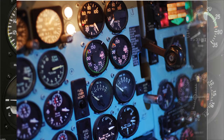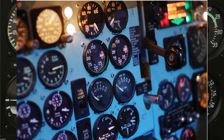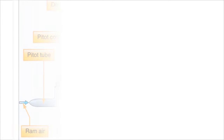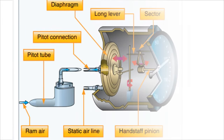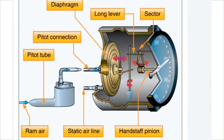Air Speed Indicator: an instrument that measures the speed of an aircraft relative to the surrounding air. Using the differential between the pressure of still air — static pressure — and that of moving air compressed by the craft's forward motion — ram pressure — as speed increases, the difference between these pressures increases as well.